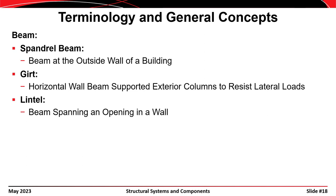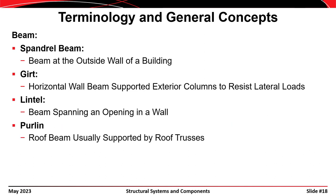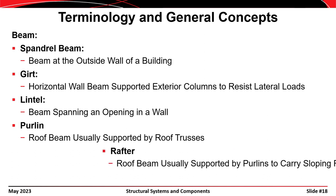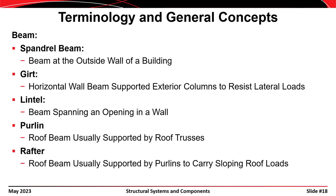A header is a special case of a lintel used in wood construction over windows and doors. A purlin is a roof beam usually supported by roof trusses — you put trusses spanning the long direction, then purlins spanning perpendicular, and roof decking supported by the purlins. A rafter is an element in the roof that usually supports the primary part of the roof framing.